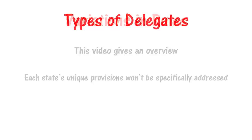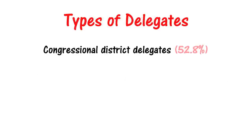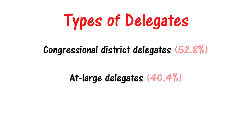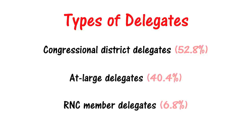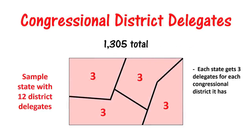The RNC gives states three types of delegates: Congressional District Delegates, At-Large Delegates, and RNC Member Delegates. Each state gets three delegates for each Congressional District it has, which means states with greater populations, and therefore more Congressional Districts, get more of these delegates.